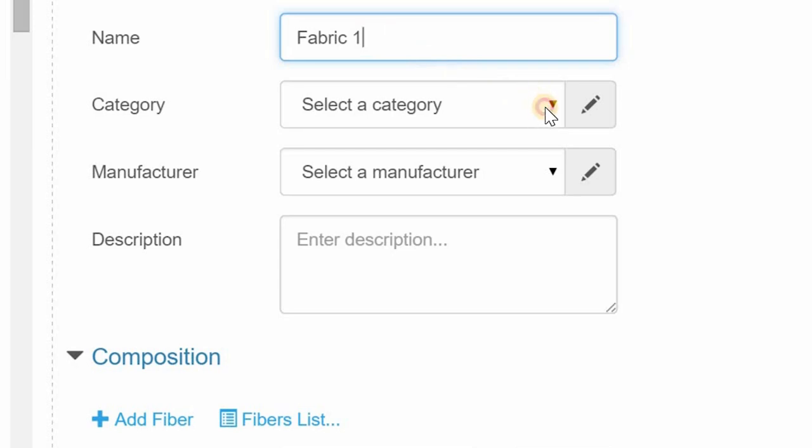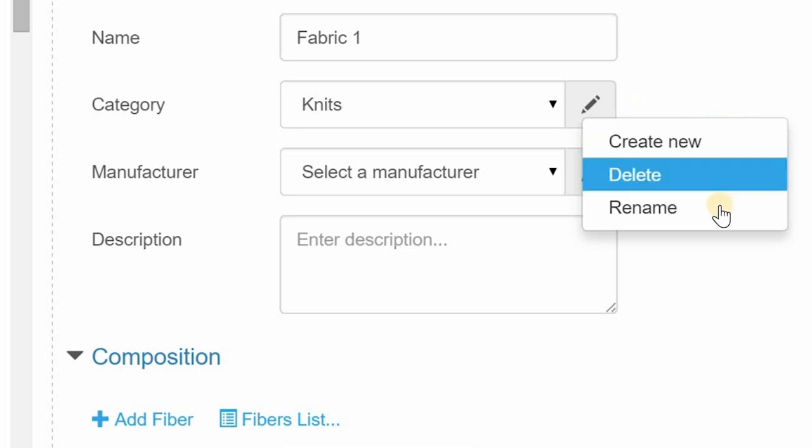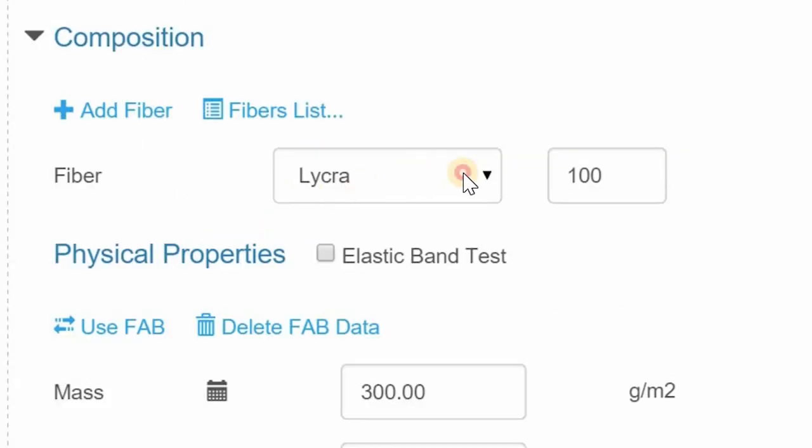Choose your category. For this example, we will choose Knit. If the desired category of fabric cannot be found, simply click the Pencil Edit button on the right to add a new fabric category name. Next, add the fiber content under the Composition section.